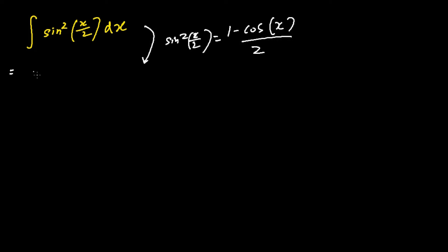Substituting sine square x over 2 as 1 minus cosine x over 2 dx, and this can be further split into two integrals in such a form.